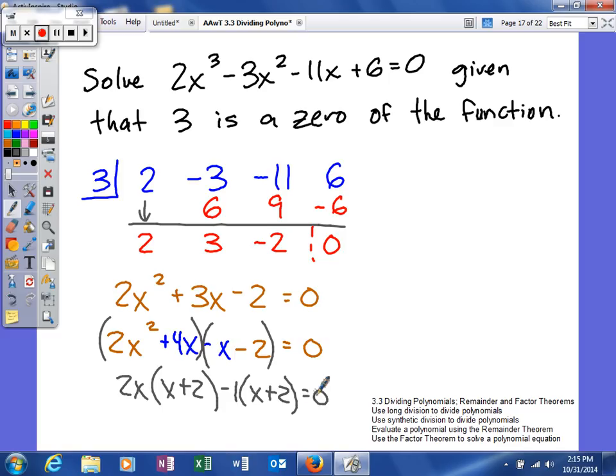So actually, the factored form for our polynomial will look like this: 2x minus 1, and then x plus 2. But then lastly, we don't want to forget about the factor that we already were given. So the other factor that we were given was the factor of 3, which we can write as x minus 3.